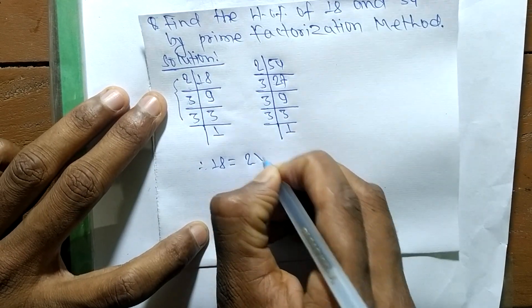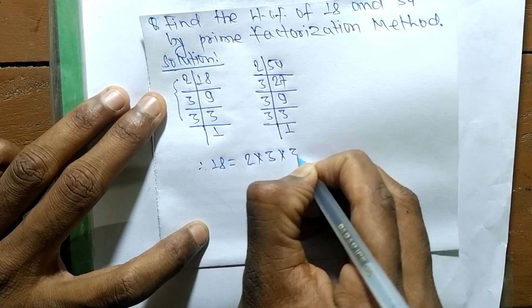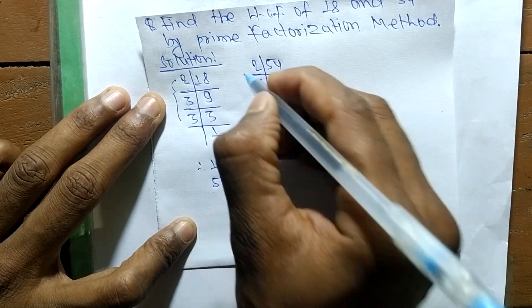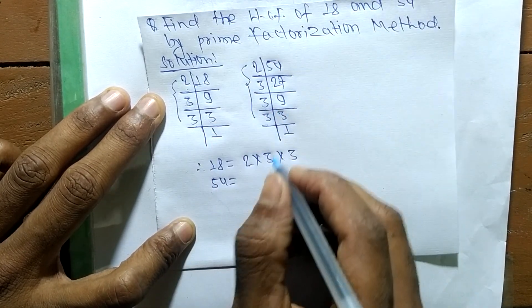this part it becomes 2 times 3 times 3. Likewise, 54 is equal to, from this part it